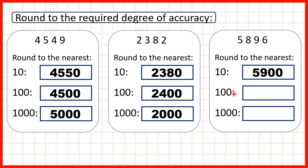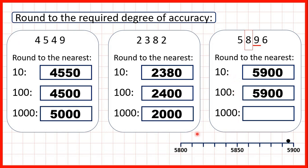Now, let's round to the nearest hundred. We can find our hundreds digit, underline the digit to the right, and we can see that we're rounding up, so this eight becomes a nine, which means we get five thousand nine hundred. So, we get the same answer rounding to the nearest hundred as we did rounding to the nearest ten. Sometimes we can round to different place values and get the same answer. If I were to count up in hundreds, I would eventually get to five thousand eight hundred, and then five thousand nine hundred, and five thousand eight hundred and ninety-six is closer to five thousand nine hundred.